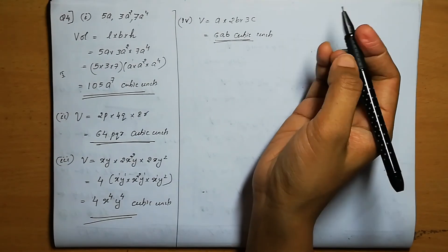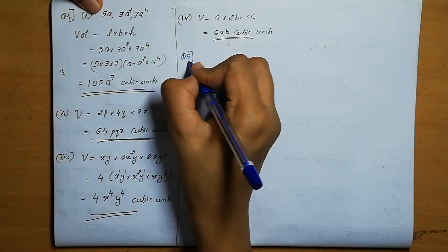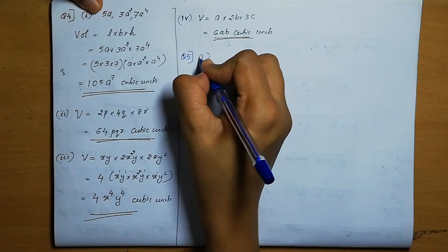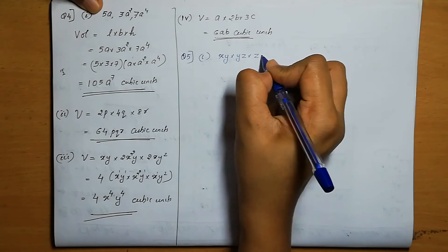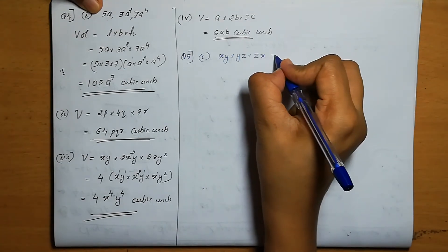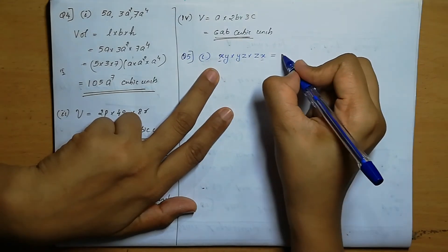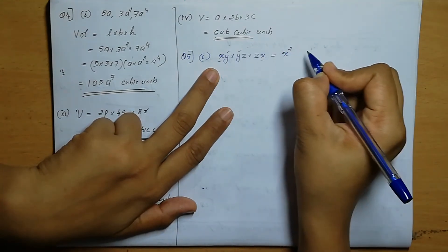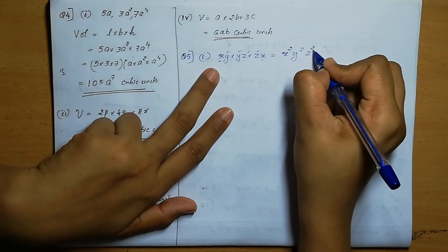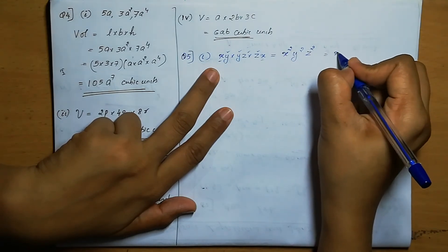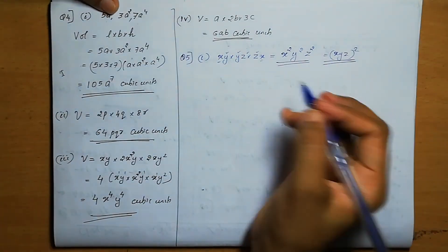Question number 5: Obtain the product of the following terms. First one: xy into yz into zx. Just multiply: x into x is x square, y into y is y square, z into z is z square. So the answer is x square y square z square, or xyz whole square.